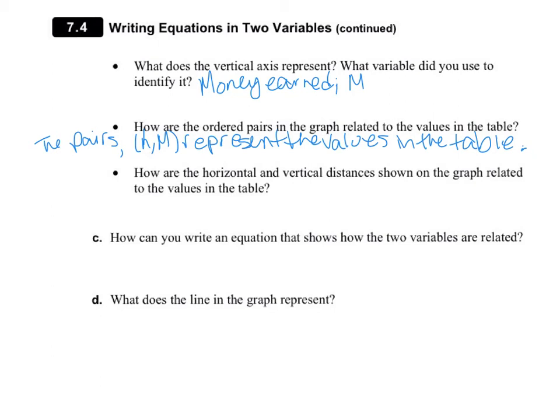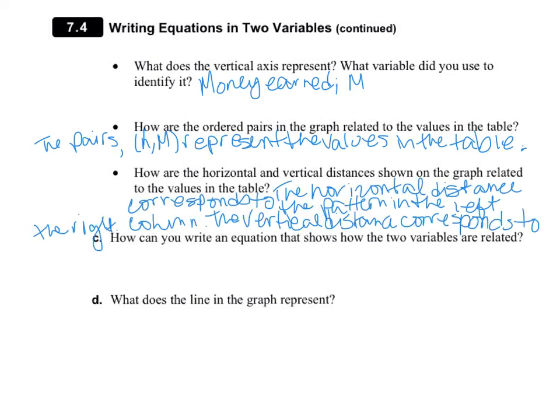So when you look at the table, you'll notice that there's a pattern between the numbers in the left and right columns. And the horizontal distance corresponds to the pattern in the left-hand column. And the vertical distance corresponds to the pattern in the right-hand column. So we're going to write that. So for those of you who are having a hard time reading my writing, it says, the horizontal distance corresponds to the pattern in the left column. The vertical distance corresponds to the right.